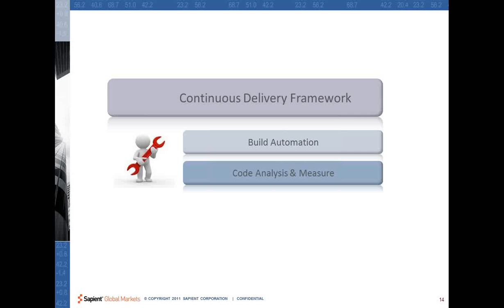Continuing our example of the kid who wants to become a cricketer — Sanjay — he has enrolled in an academy and now has tools like bat and ball, but now he has to start learning. He starts practicing and needs to have continuous feedback about how he is practicing and how he is improving. This is manual in this case because someone has to tell him whether he is playing a shot well or not.